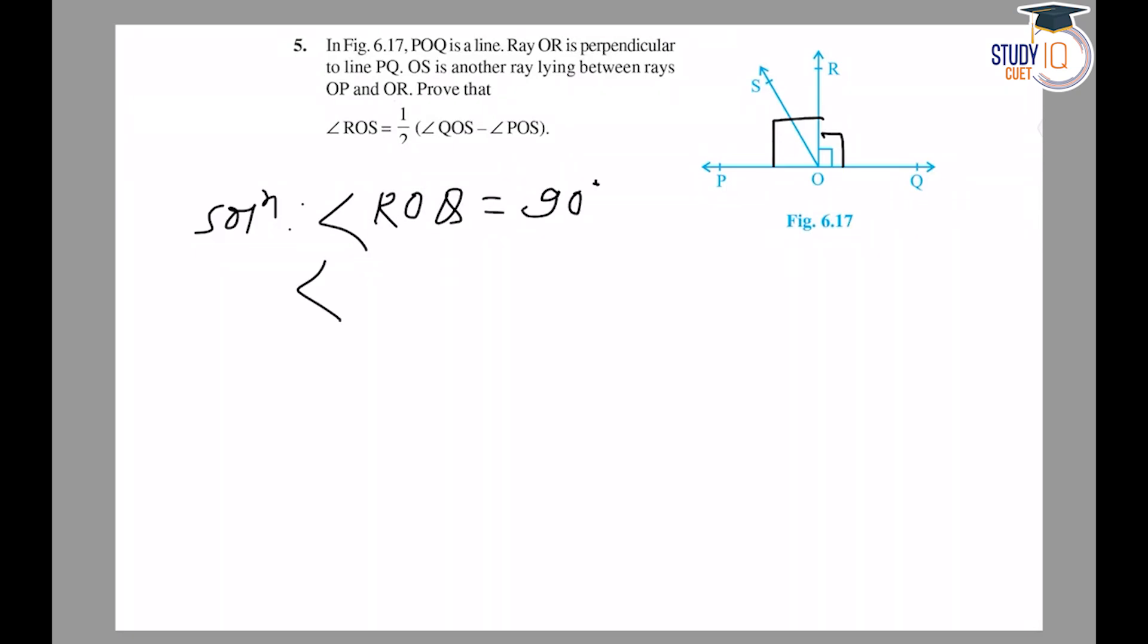POQ and OR are perpendicular, hence angle ROQ is 90 degrees. Similarly, angle POR is 90 degrees. But I have to find angle ROS. From the figure, angle ROS can be written as angle QOS minus angle QOR.